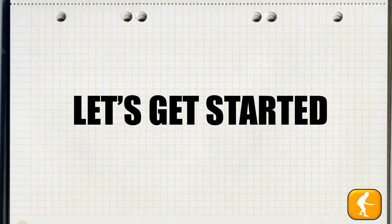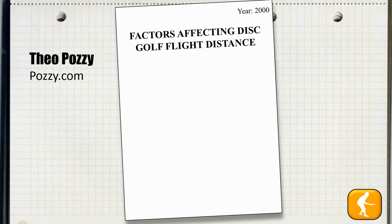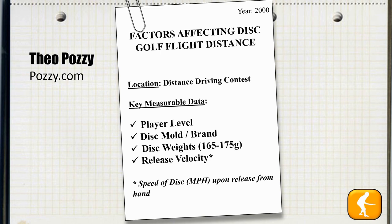There are lots of opinions on this topic, but we'd rather start off with some hard data. The data source we're using for this portion of the analysis is a study done by Theo Pozzi. It was done in the year 2000 on factors affecting disc golf flight distance. He did the study at a disc golf distance driving contest, and he got a lot of key measurable data including player level, disc mold and brand, disc weights, and release velocity, which we're defining as the speed of a disc in miles per hour upon release from the hand.